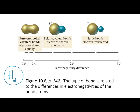The seven diatomic elements are: hydrogen (H), oxygen (O), fluorine (F), bromine (Br), nitrogen (N), iodine (I), and chlorine (Cl) — spelling out HOFBrNICl. A little subscript 2 means they like to be paired up in nature.